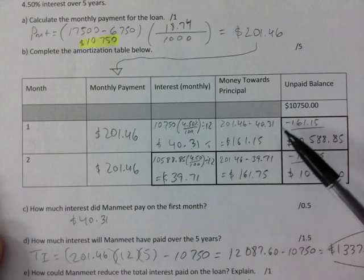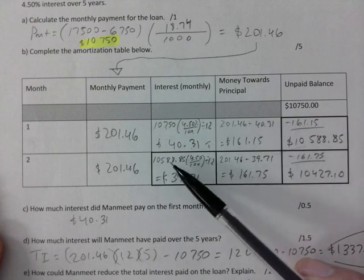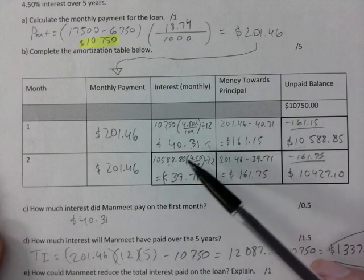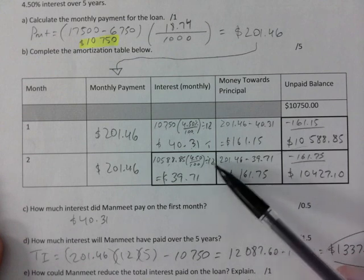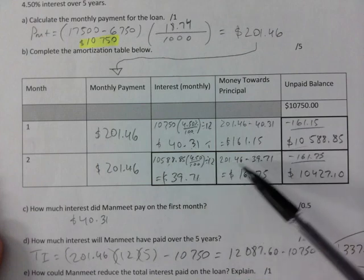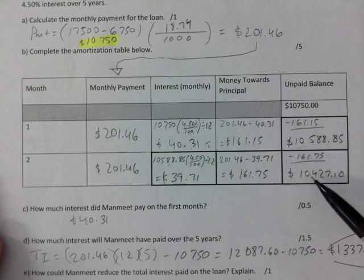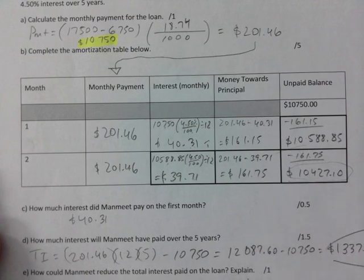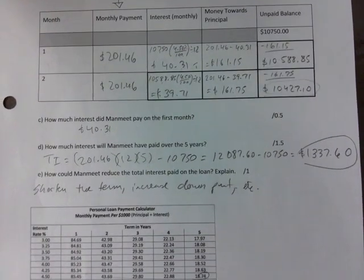Now you've broken down the payment into two pieces. The principal brings down the unpaid balance, then you repeat the process — take this unpaid balance to the second line. The rest stays the same: 4.5% divided by 100, all divided by 12. Take that away from the payment to get your principal portion, which in turn brings down your unpaid balance. This is how much you owe after two months.